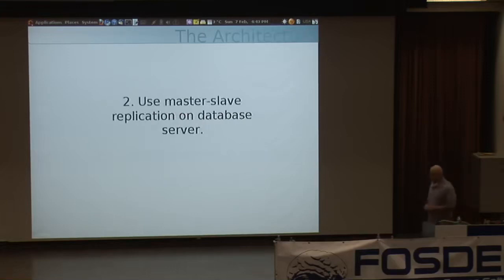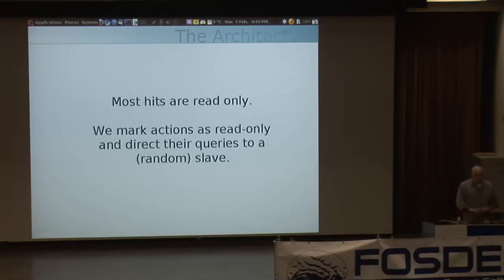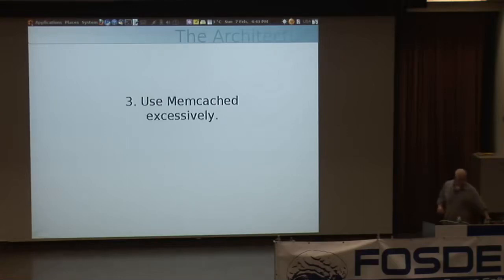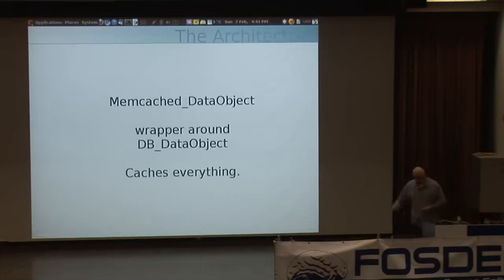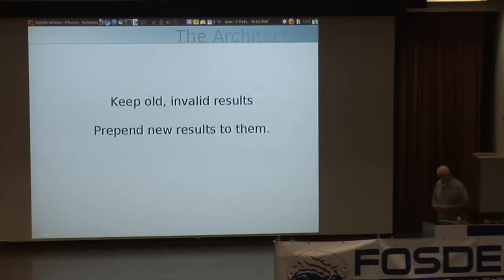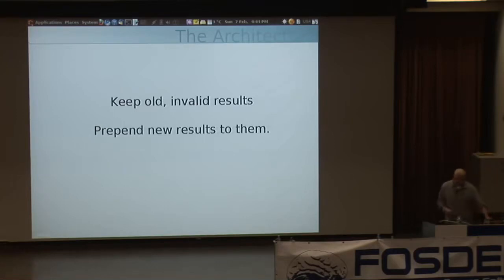Second, we use master-slave replication for our database server. Most of our hits are going to be read-only, so we can mark each action at the granularity of the action or page and direct those queries to a slave server. We also use memcached almost to a fault — we've added a wrapper around DB_DataObject that pretty much caches everything. We cache on read, we cache on write, we cache single objects, we cache query results. We even keep old invalidated results so that if we have a list of notices, we can just prepend new results onto them.